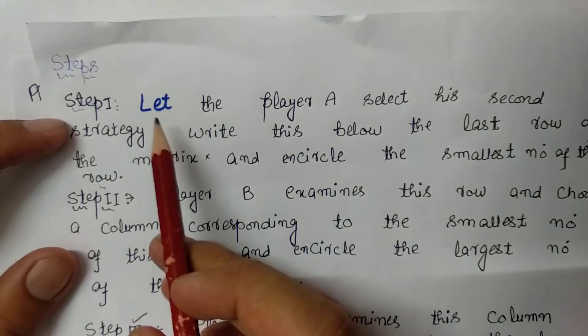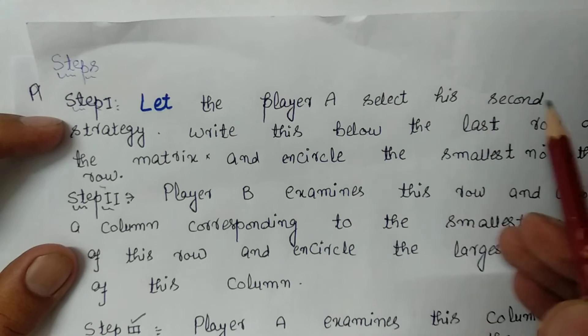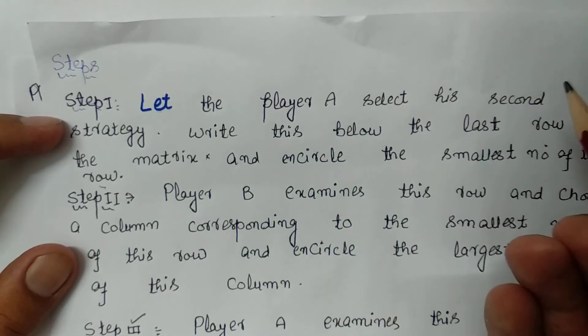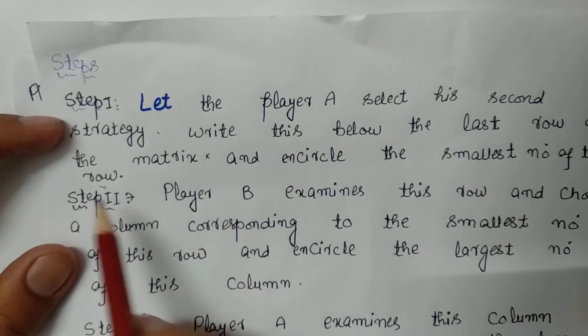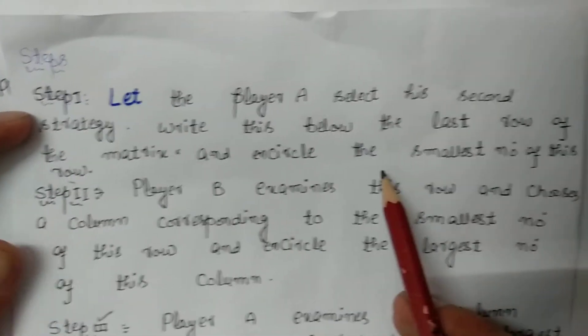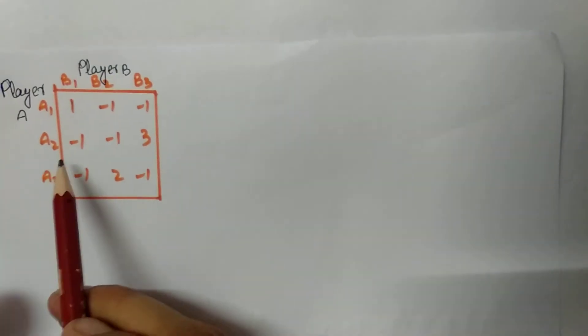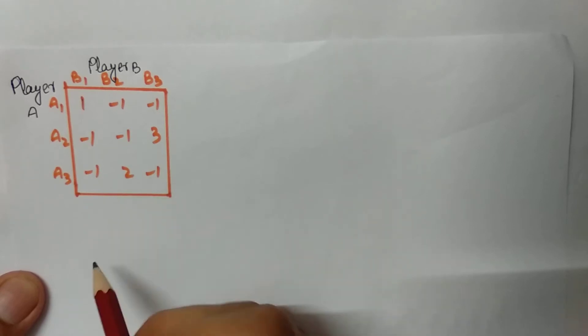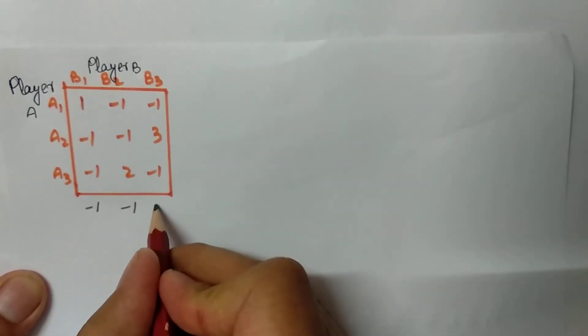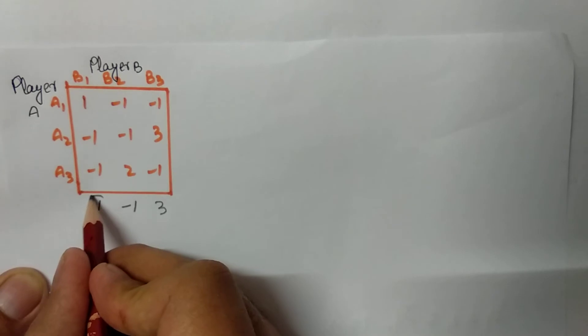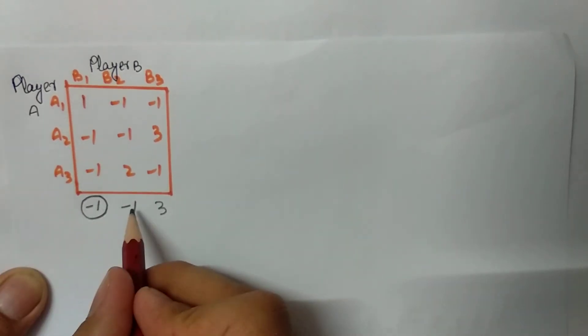Now let us start solving the problem step by step. Step 1: let Player A select his second strategy — we can choose any strategy randomly. Write this below the last row of the matrix and encircle the smallest number of this row. Here we are choosing the second strategy and write below the last row: minus one, minus one, and three. The smallest element is minus one, so we encircle it.